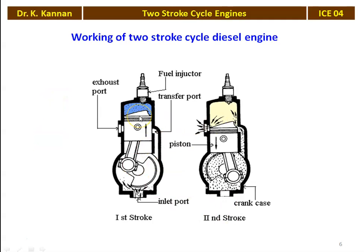The only difference between the petrol engine and the diesel engine is that we have a fuel injector in the case of the diesel engine, whereas in the petrol engine we have a spark plug. Among the two engines, the 2-stroke cycle petrol engine is very popular and is used in two-wheelers — light vehicles, mopeds — for low capacity, low weight applications.